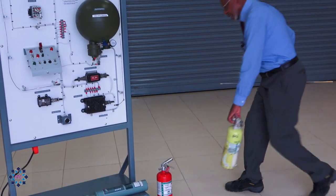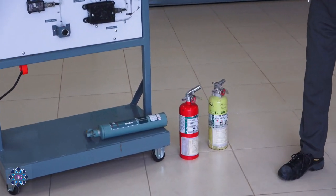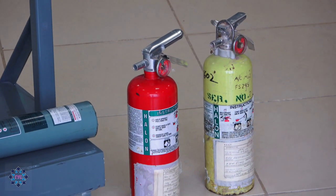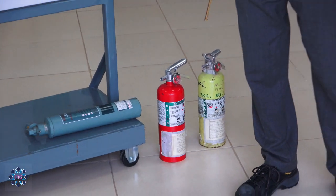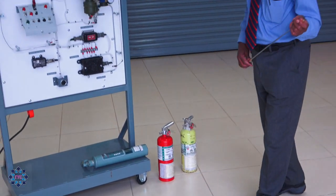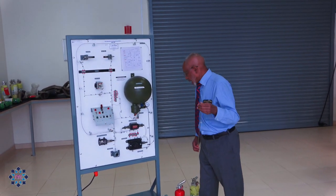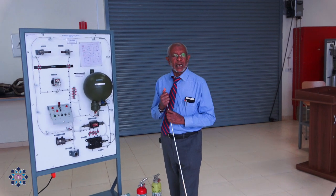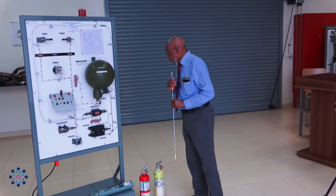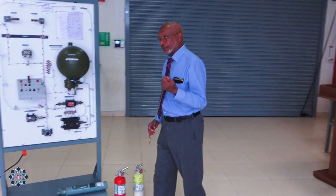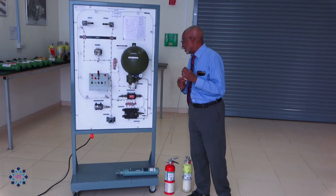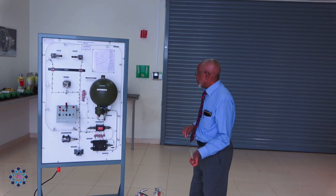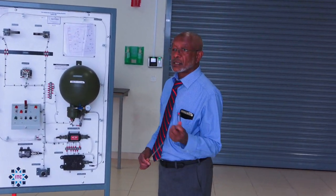For Class D fires involving metals like magnesium or potassium or any other material that catches fire, we extinguish it with halon as well. That covers the fire extinguishing system for the aircraft. I hope you understand and follow along — if you have any questions, we will be here. Don't hesitate to ask. Thank you, good day.